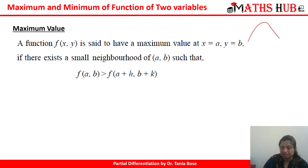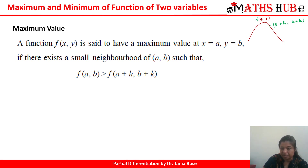For example, let us take this curve and let us take a point as (a, b). Let us take the neighboring point as (a+h, b+k). Now, when you calculate the value of the function at (a, b) and the value at (a+h, b+k), according to the shape of this curve you can see that the value at (a, b) will be more than the value at (a+h, b+k).